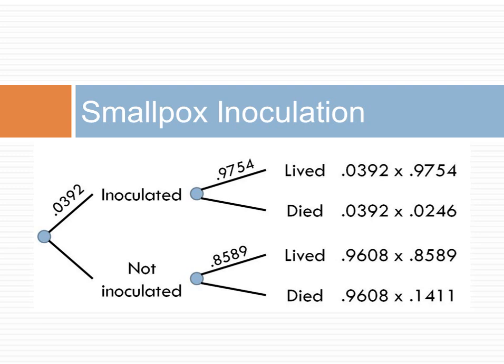A tree diagram allows us to calculate the joint probability of two events as the product of the probabilities in the path of the event. Note that each path shows a distinct combination of events. Here, the probability of inoculation and living is the product of 0.0392 and 0.9754.